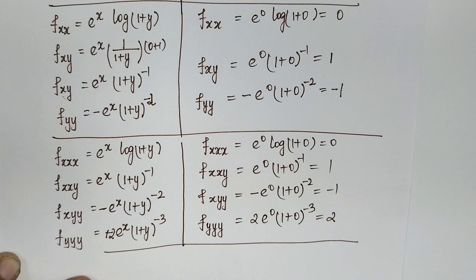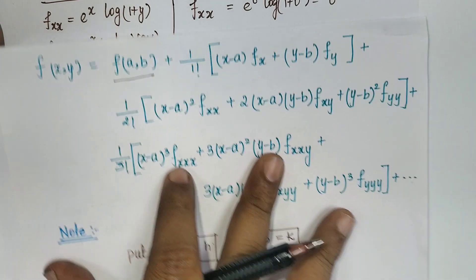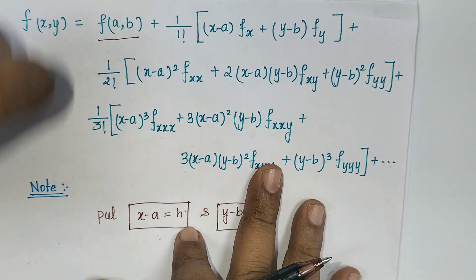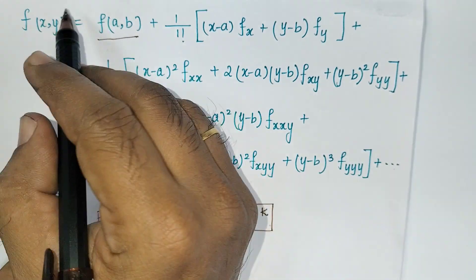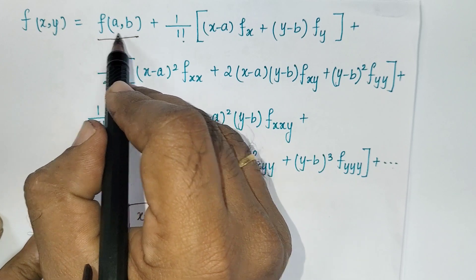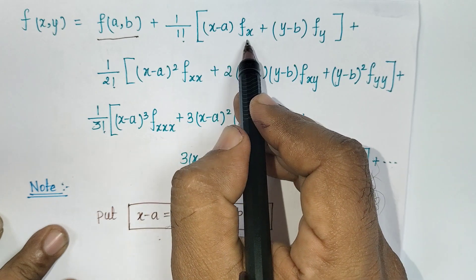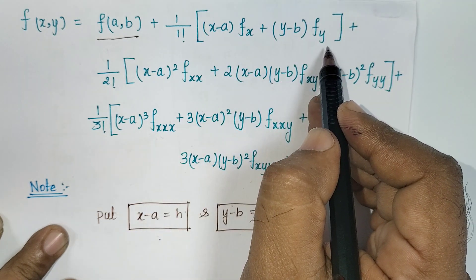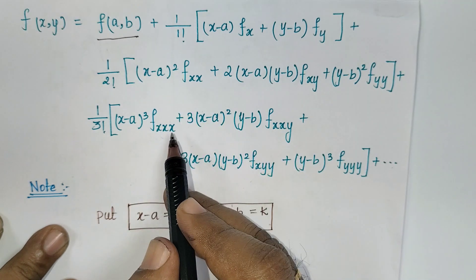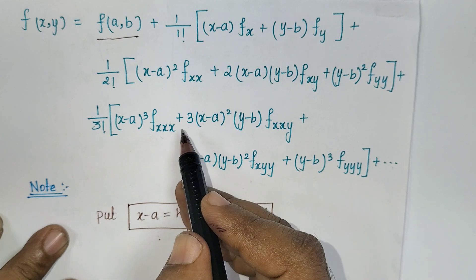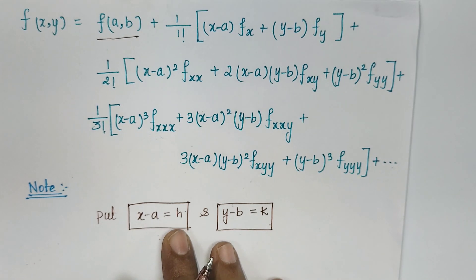Now we have identified all values for first, second, and third degree. We have to substitute all these values into the Taylor series formula: f(x, y) = f(a, b) + (1/1!) [(x−a)fx + (y−b)fy] + (1/2!) [(x−a)² fxx + 2(x−a)(y−b)fxy + (y−b)² fyy] + (1/3!) [(x−a)³ fxxx + 3(x−a)²(y−b)fxxy + 3(x−a)(y−b)² fxyy + (y−b)³ fyyy].